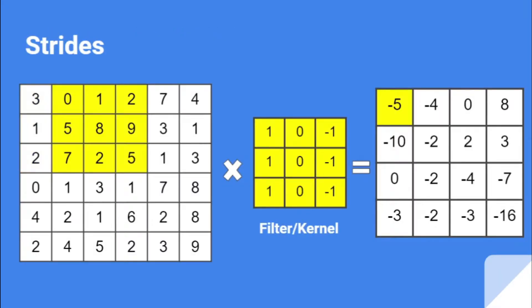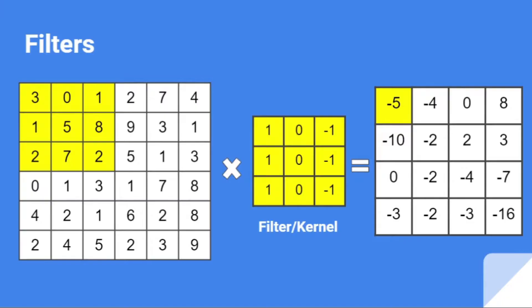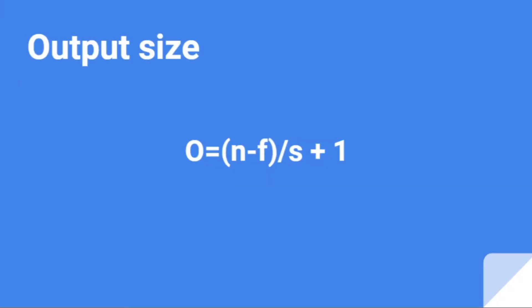After discussing filters, let's go to strides. From the animation you would have understood what strides are. In this case, the first 3 by 3 yellow-colored section in the input tensor is multiplied with the filter, and after the mathematical operation the value minus 5 is stored. Then we shift by 1 unit to the right — that is strides. The strides in this case is 1. In the next case, we move by 1 stride right, so the strides is 2.